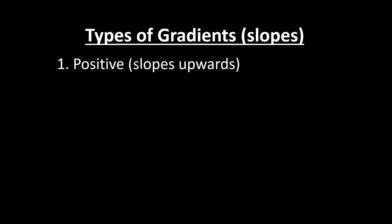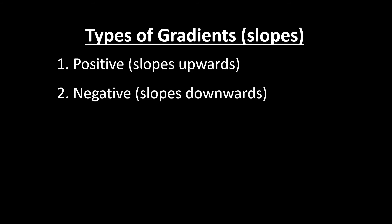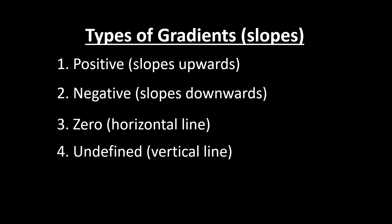Here's a quick summary of the different types of gradients. There are four: the first is positive, sloping upwards; the second is negative, sloping downwards; the third is a slope of zero for a horizontal line; and the fourth is a vertical line, which is undefined. Thanks for watching, I'll see you in the next video.